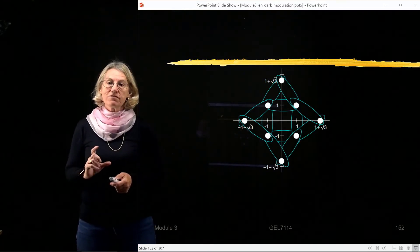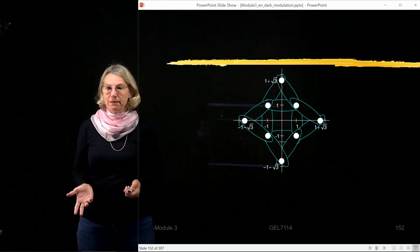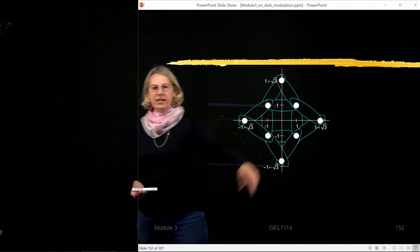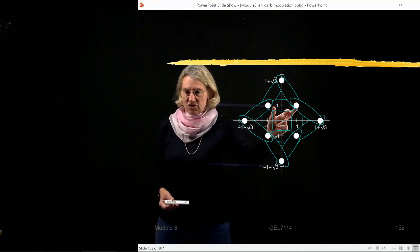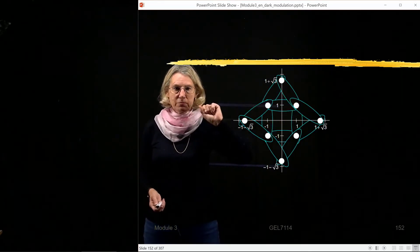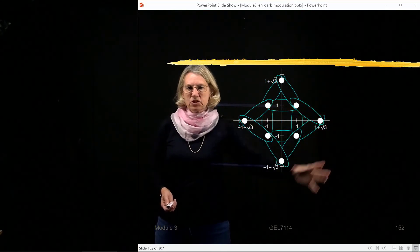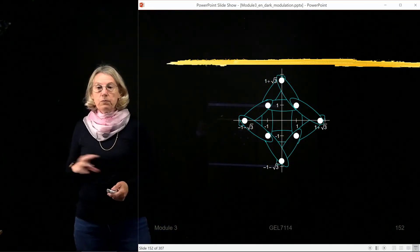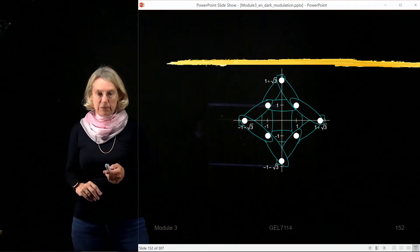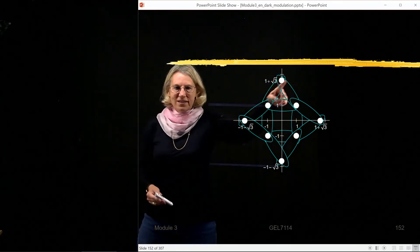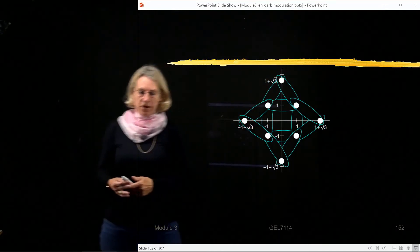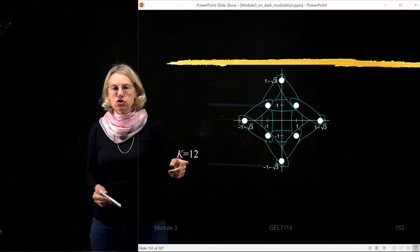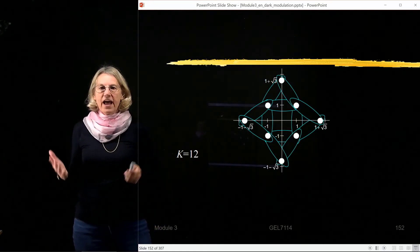The next step in getting the estimate of the probability of error from the union bound is to find the factor K, which is the number of pairs of symbols which are located at the minimal distance. If I look at these eight points, I know that these three points are equidistant in the IQ space. By the symmetry of this constellation, I can see that there are three more sets of three points at this minimal distance. Of course, this point and this point is not at the minimal distance—they're a lot farther apart. So if I count them, I get that there are indeed 12 pairs at the minimum distance.